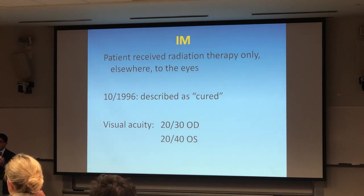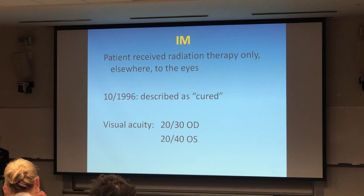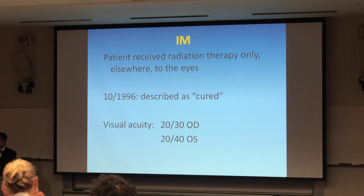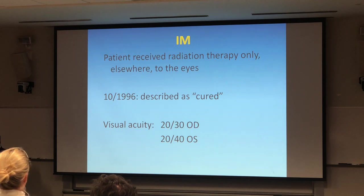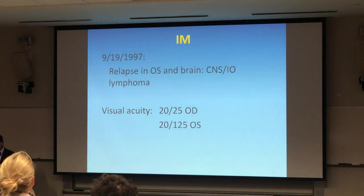The diagnosis here would be intraocular lymphoma with possible CNS involvement. This patient was treated with intravenous methotrexate at Massachusetts General Hospital, and also received radiation therapy to the eye. In 1996, she was thought to be essentially cured, with visual acuity of 20/30 and 20/40. The lesions appeared stable and resolved.